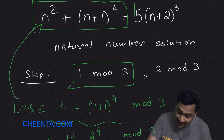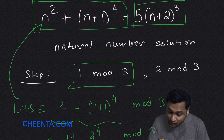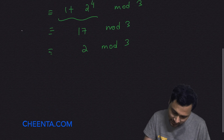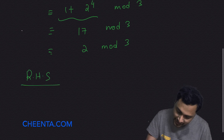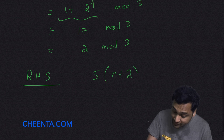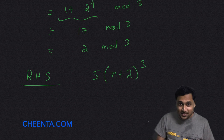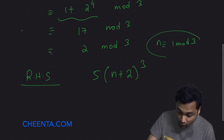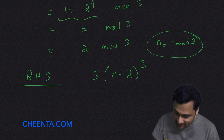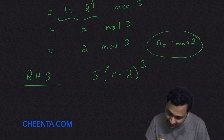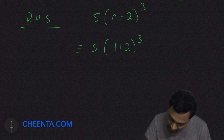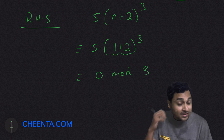Now what happens to the right hand side if n is congruent to 1 mod 3? The right hand side is 5 times n plus 2, raised to 3. Plugging in n ≡ 1 mod 3, this becomes congruent to 5 times 1 plus 2, raised to 3, which is congruent to 0 mod 3, because that part is divisible by 3.